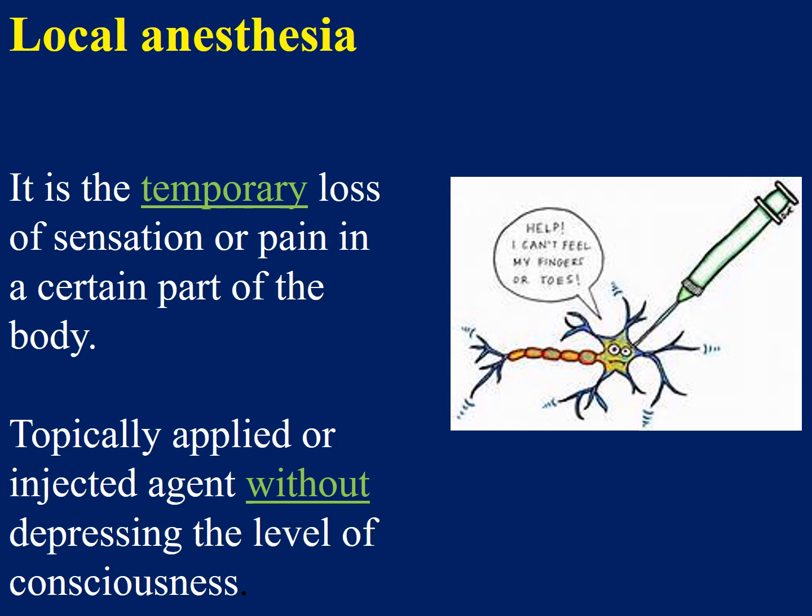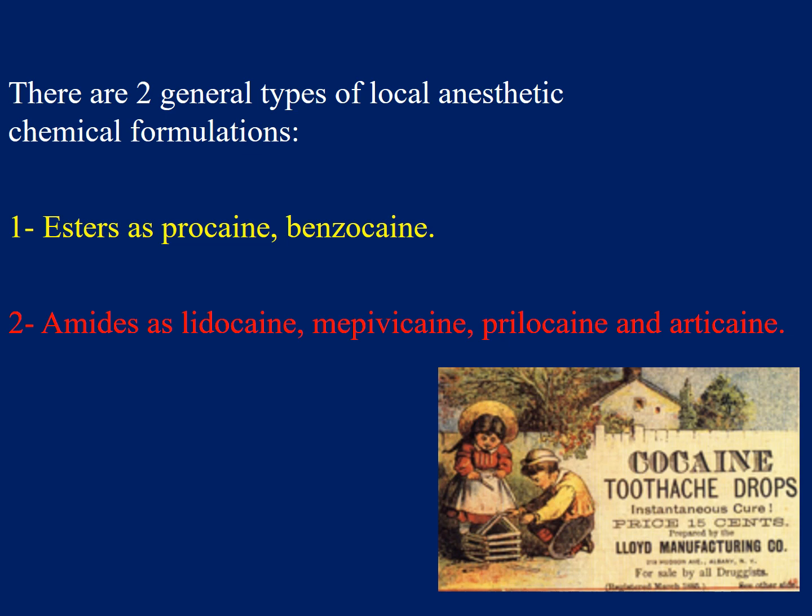Local anesthesia is a temporary loss of sensation or pain in a certain part of the body, achieved by a topically applied or injected agent without depressing the level of consciousness. There are two main types: esters such as procaine and benzocaine, and the more recent amides such as lidocaine, mepivacaine, prilocaine, and articaine.